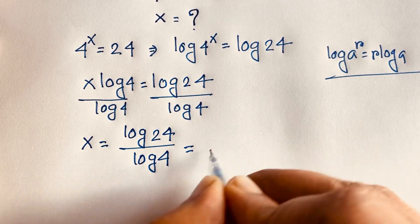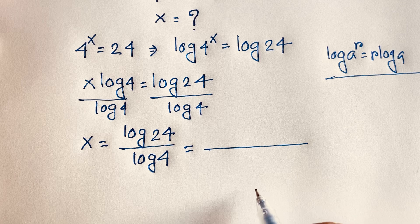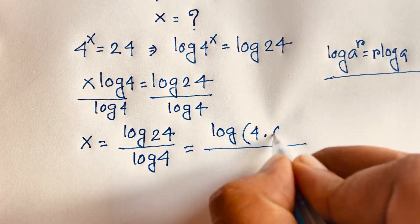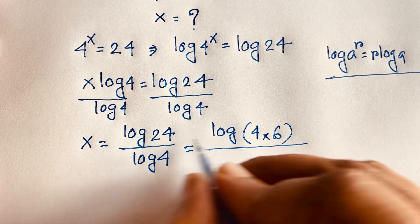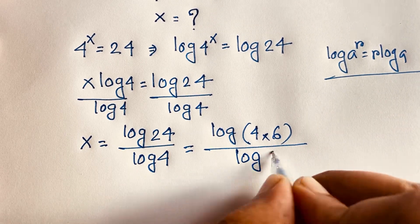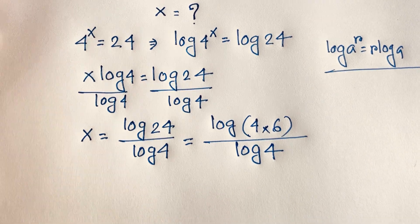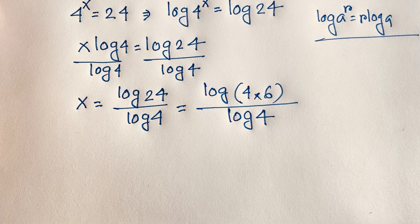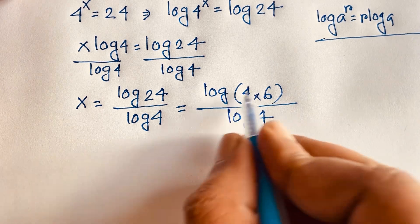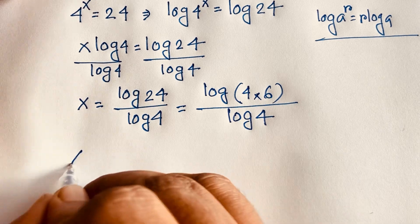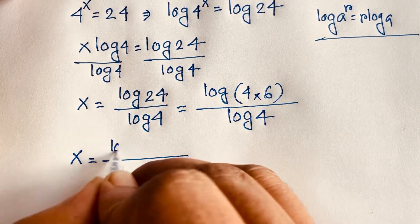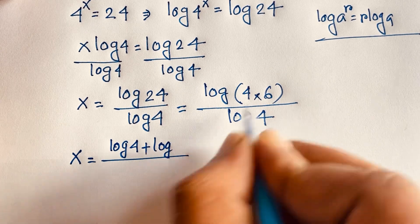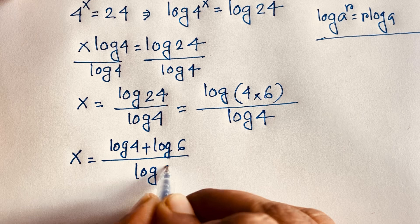Then, I can write log 24 as log of 4 times 6, since 4 times 6 is 24, over log 4. Now, we know that log(a × b) equals log a plus log b. According to this law, this expression becomes x is equal to log 4 plus log 6, over log 4.